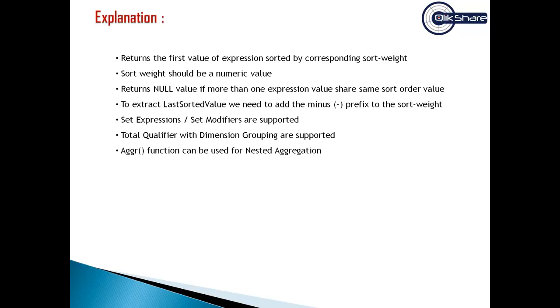To extract the last sorted value, which is opposite of the first sorted value, we need to add the minus sign to the sort weight field. That's pretty self-explanatory. Once you flip the field and add the minus value, you're actually looking at the last sorted value instead of the first sorted value.